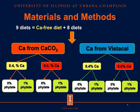We formulated nine diets. One diet was the calcium-free diet, and the other eight diets were formulated using one of the two sources of calcium, calcium carbonate or Vistacal. We had two levels of calcium, 0.4% and 0.8%. The reason that we use these two levels is because we wanted them to be lower and higher than the requirement, which is 0.6% of calcium. And we used two levels of phytate, 0 and 1%.